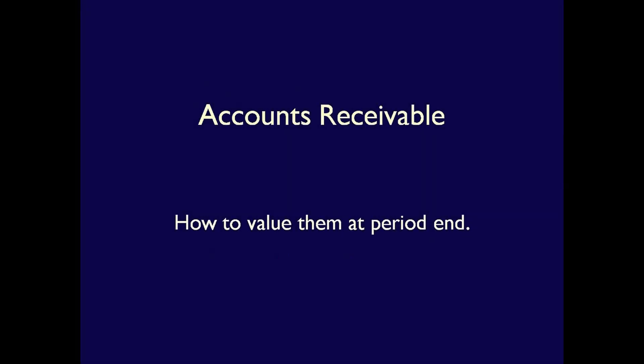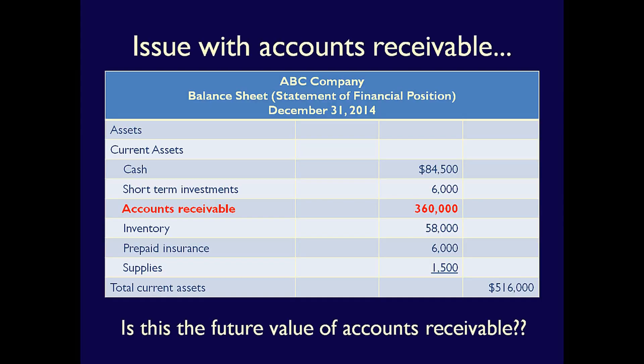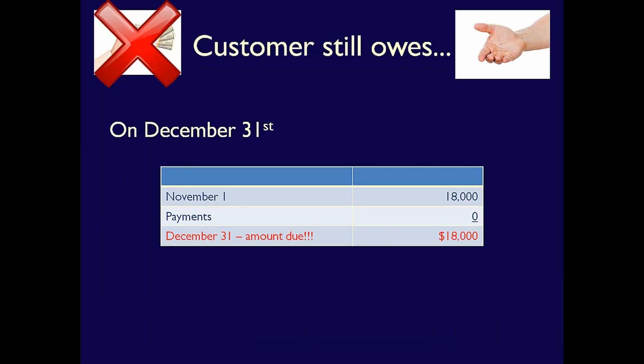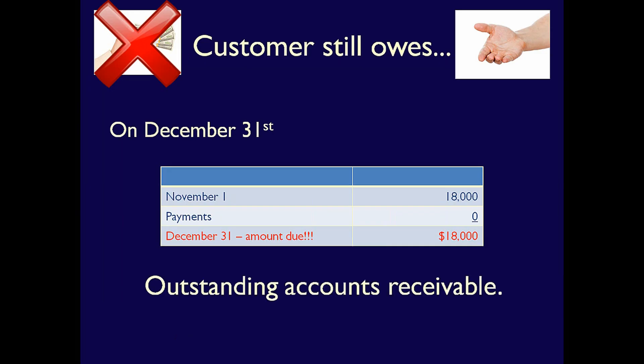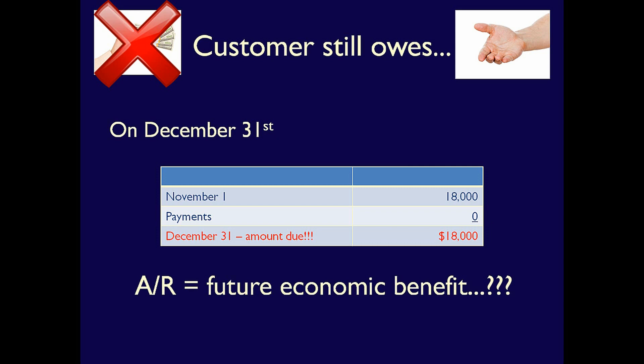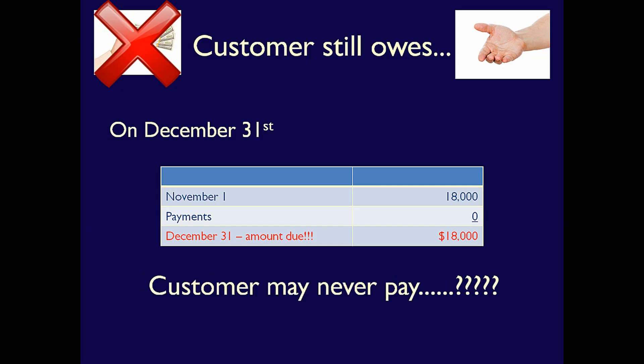Hi, Else here, and in this video we'll be exploring accounts receivable that are uncollectible. In our last video, we noted that the accounts receivable balance on the balance sheet might not be at its future economic benefit. That's because one of the customers of ABC Company appeared to be having trouble paying their accounts receivable balance. This customer had an outstanding accounts receivable of $18,000 at the end of 2014. We know that assets have to be equal to their future economic benefit, and this accounts receivable of $18,000 will likely not have future benefit because the customer may never pay.